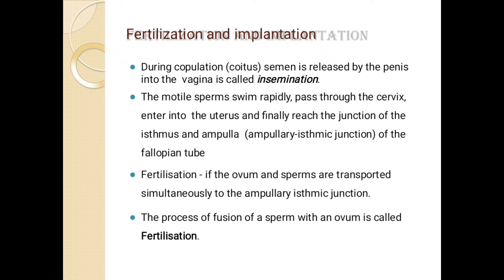After insemination, motile sperm rapidly swim up through the uterus and finally reach the isthmus and ampulla, which are parts of the fallopian tube. The ovum and sperm are transported simultaneously to the ampulla-isthmic junction. The fusion of sperm and ovum is known as the fertilization process.